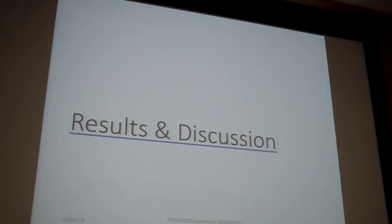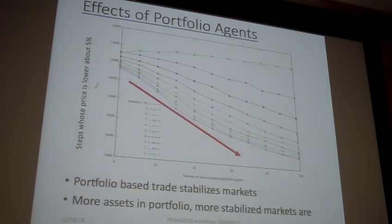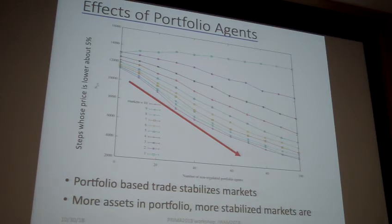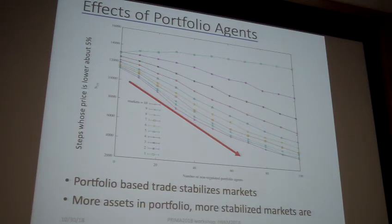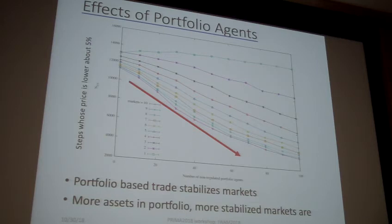Here are the results from scenario one. The horizontal axis is the number of non-regulated portfolio agents, and the vertical axis is the number of steps whose price is lower than about 5% below the fundamental price. According to this figure, with more assets in the portfolio and more portfolio agents in the market, price shocks happen less and less. This means portfolio diversification stabilizes the market.